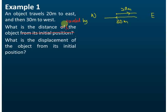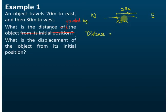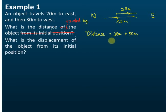The first question is: what is the distance traveled by the object? We have just learned that distance is the sum of the length of the path. It traveled 20 meters to the east and 30 meters to the west, so the distance is 20 meters plus 30 meters — the total distance is equal to 50 meters.